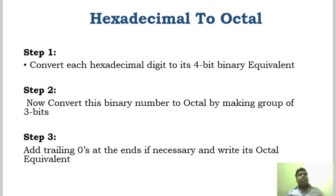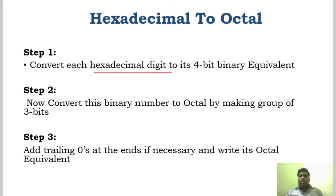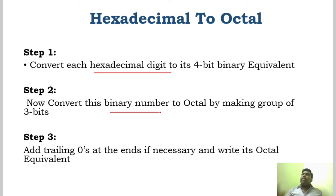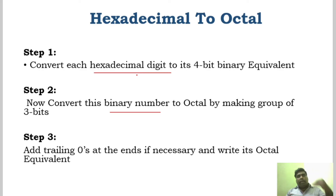Now we will see how to convert hexadecimal to octal. The same steps but with a small change. Here the first step is the given number is hexadecimal, so we have to convert the hexadecimal to binary first — just like previously we converted octal to binary. Then the binary number is converted to octal — that is the second step. And as usual, the third step is if zeros are needed, you can add them. Only thing is we have to convert hexadecimal to binary first, and then from binary we group it in 3 bits because it is an octal number.